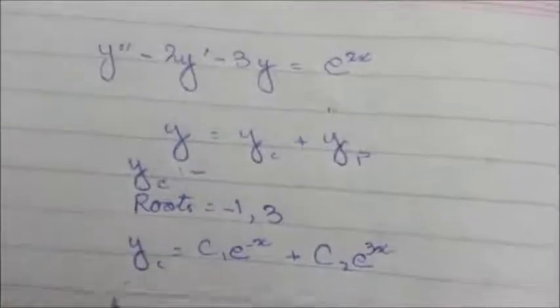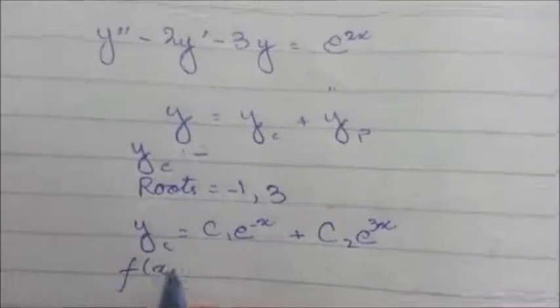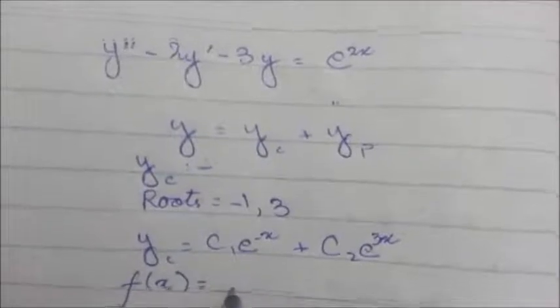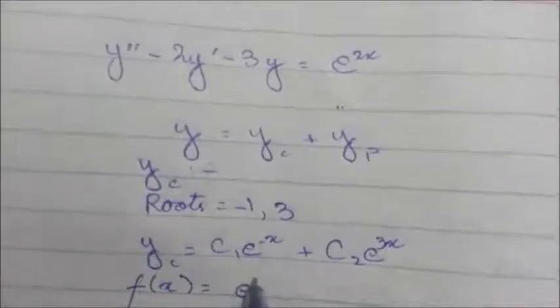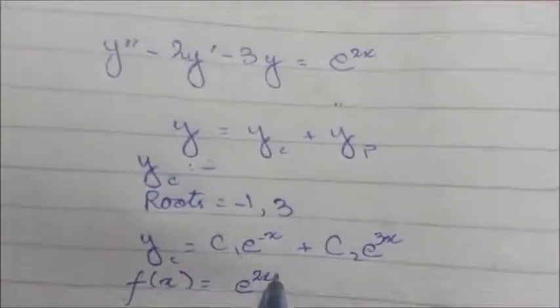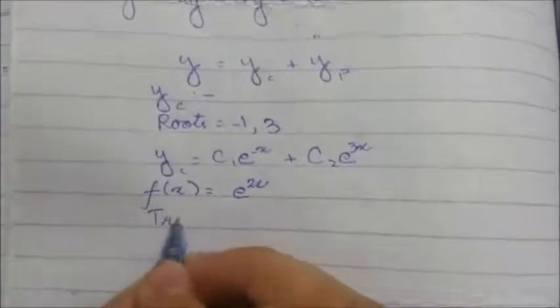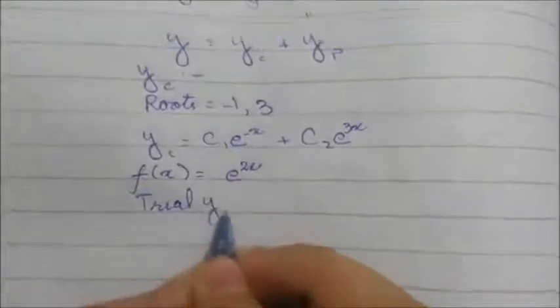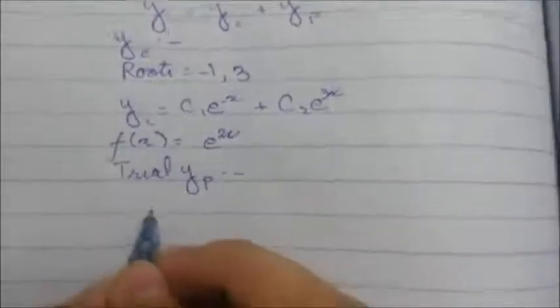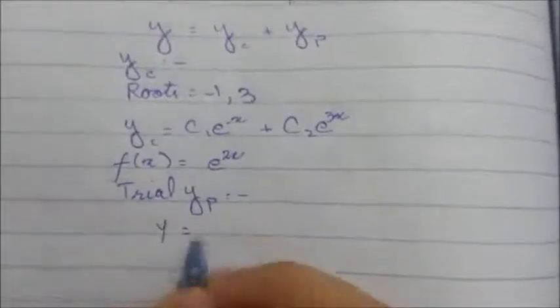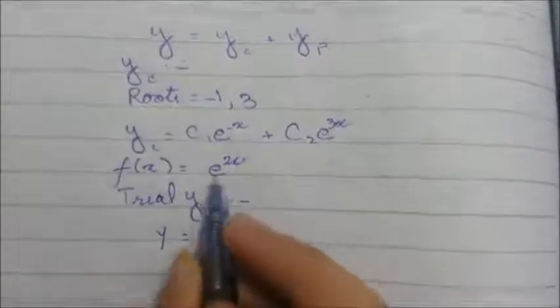Now, as we know, f(x) is equal to e^x. Now, the trial yp of the equation. So, the yp of the equation will be e^(2x).